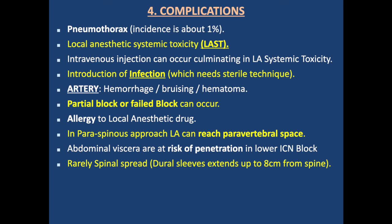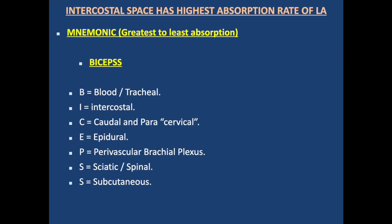Complications of intercostal nerve block include: pneumothorax (incidence ~1%); local anesthetic systemic toxicity (LAST) from inadvertent intravascular injection; infection requiring sterile technique; hemorrhage, bruising, and hematoma from arterial puncture; partial or failed block; allergy to local anesthetics; local anesthetic spread to the paravertebral space in a paraspinous approach; risk of abdominal viscera penetration in lower intercostal blocks; and rarely, spinal anesthesia because dural sleeves extend up to 8 cm from the spine. Notably, the intercostal space has the highest rate of local anesthetic absorption — we must not exceed therapeutic doses.